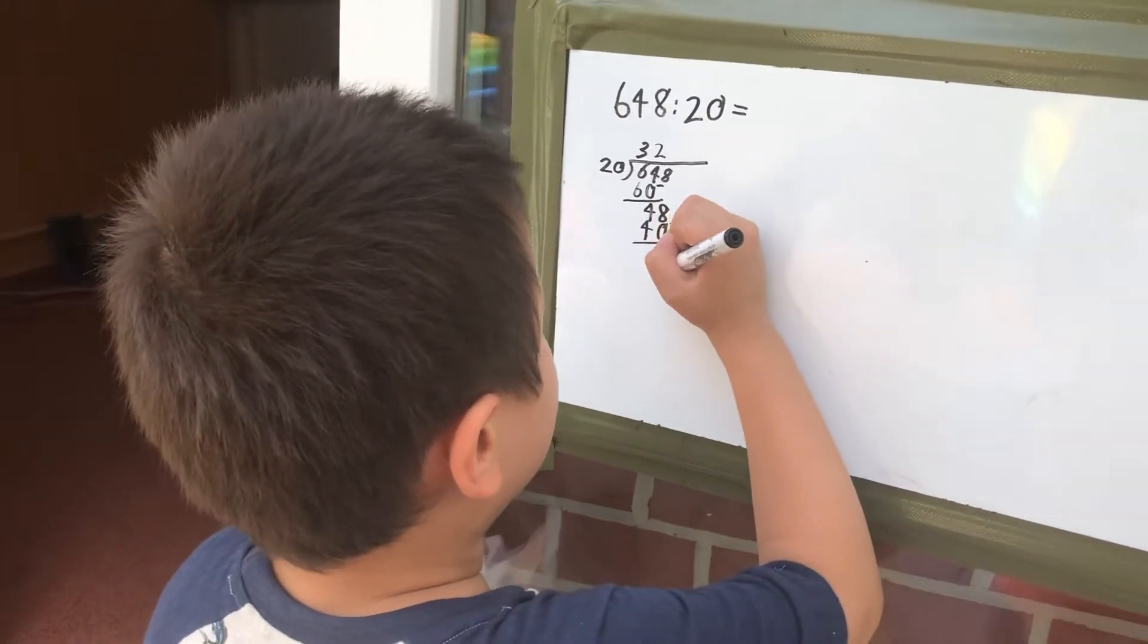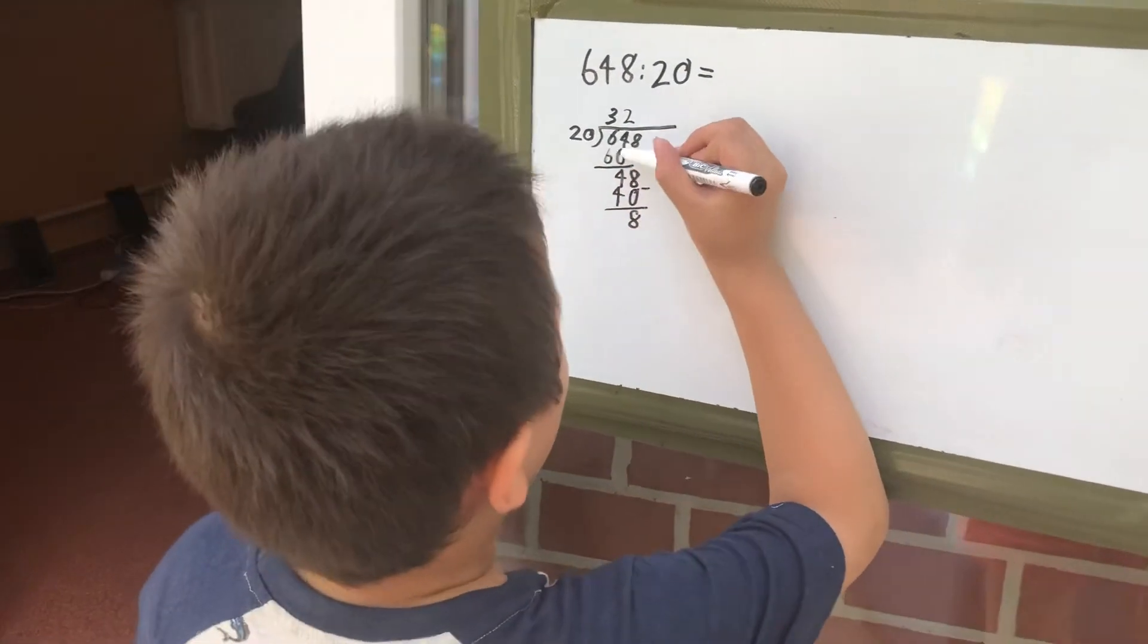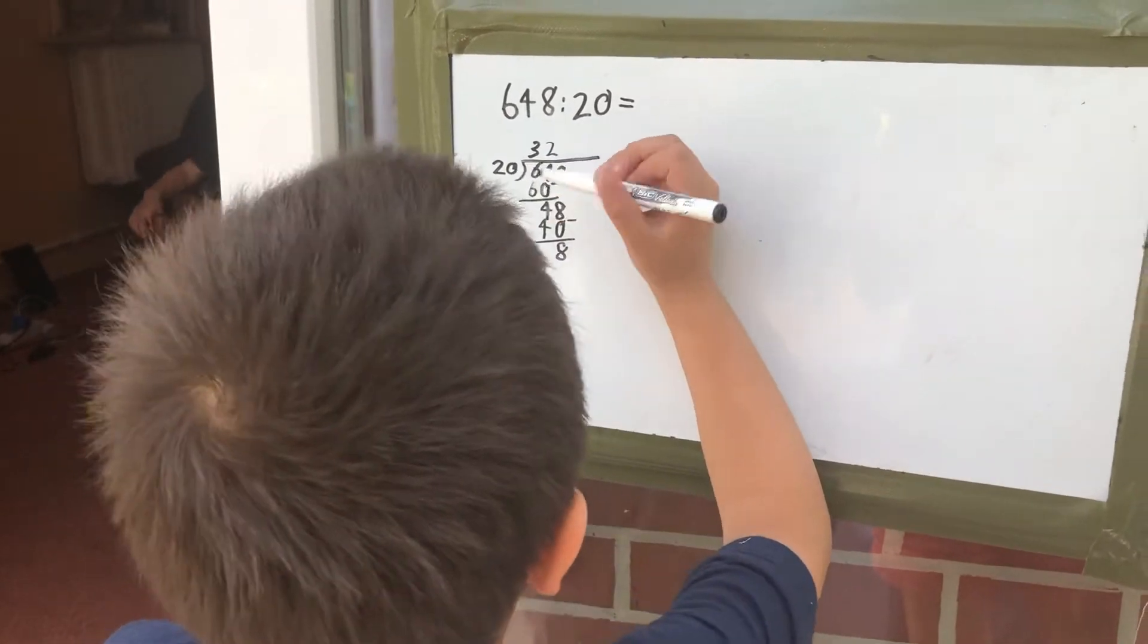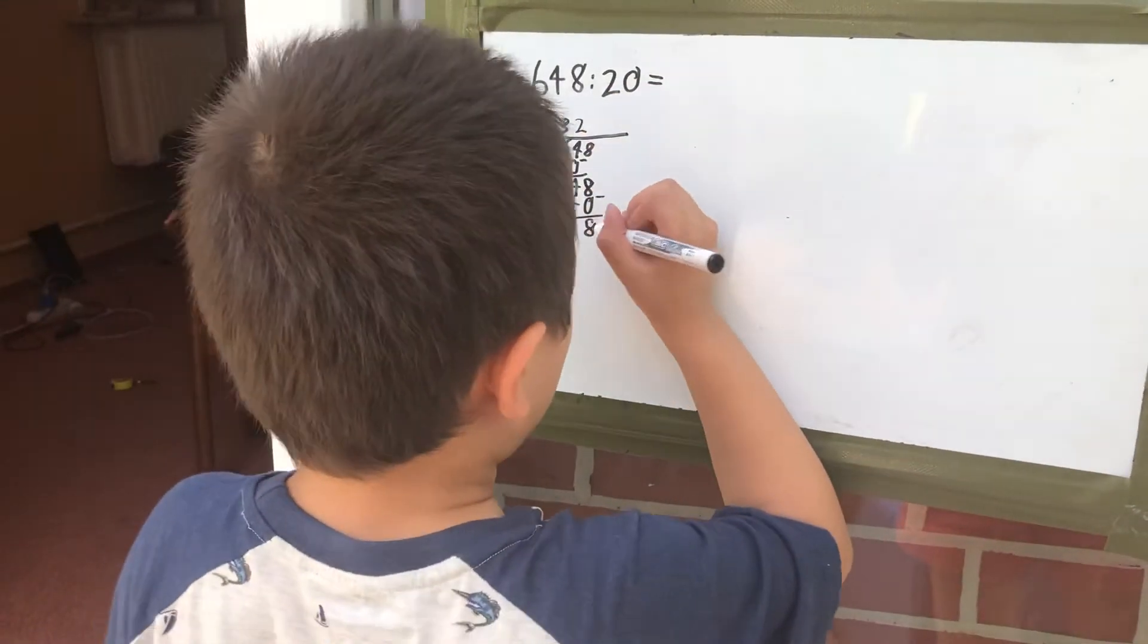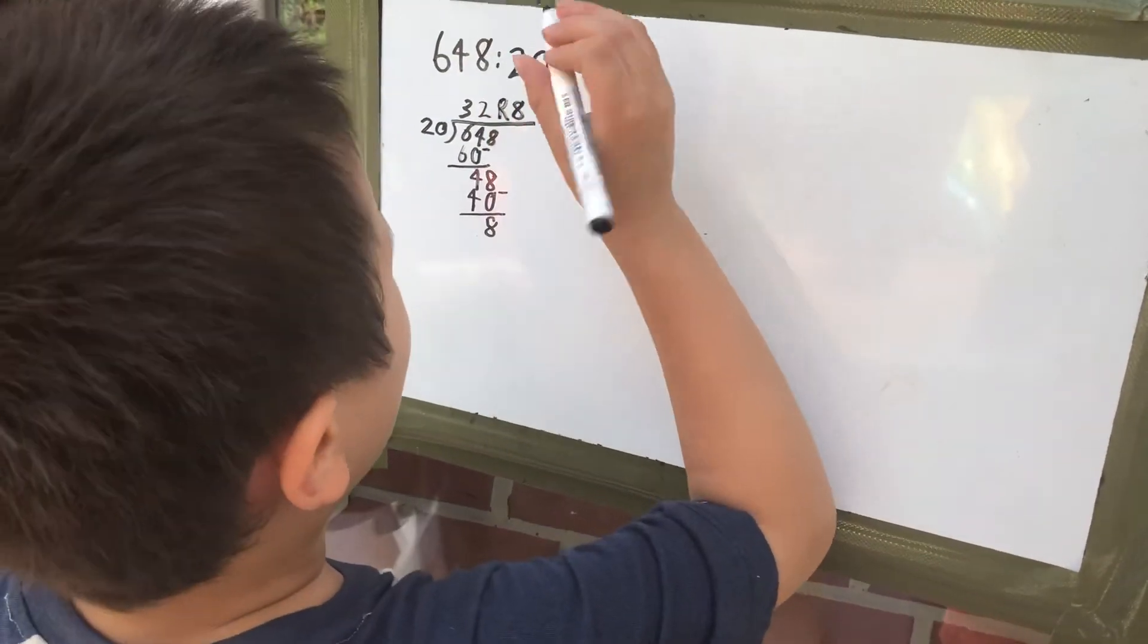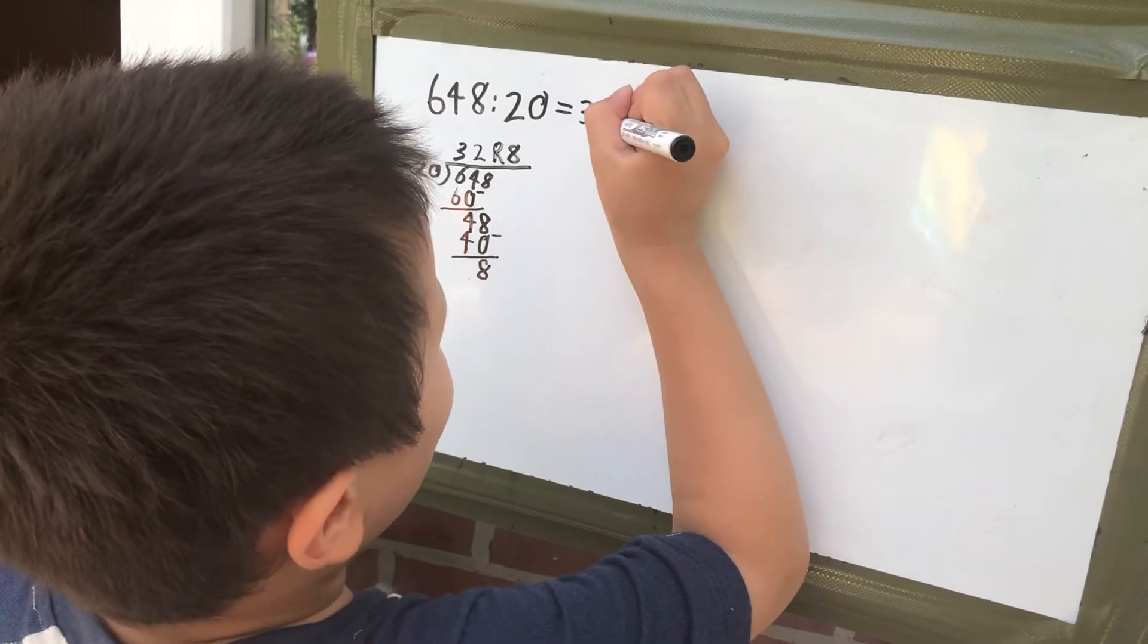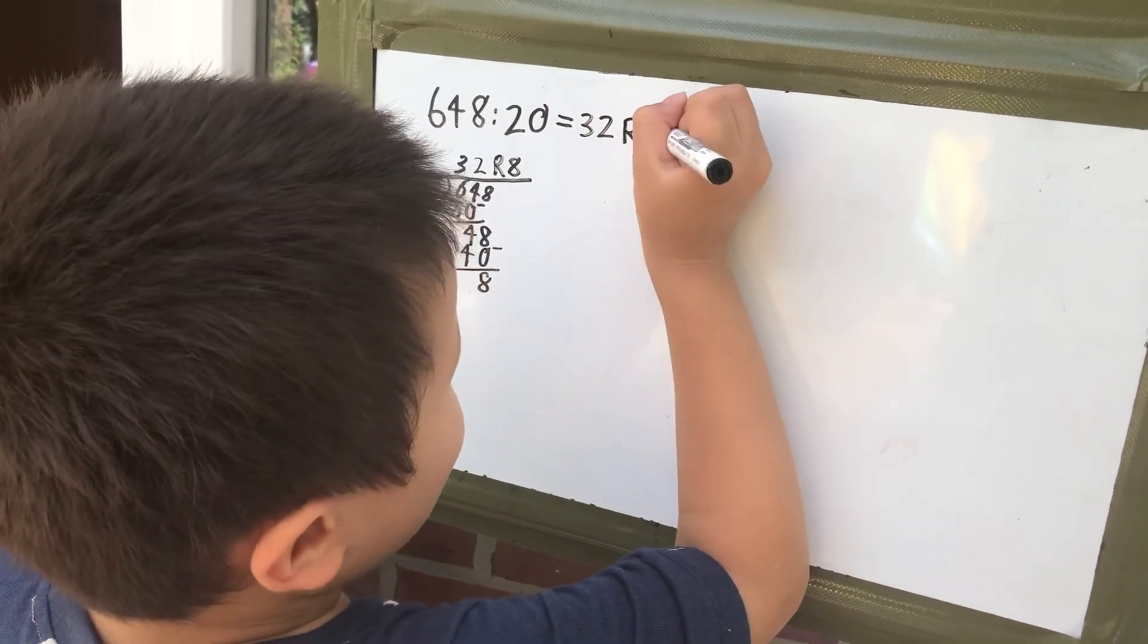We don't have to do this because it's 8. Anyway, we get off our problems. There's none left, but how about the 8? Well, we make that as a remainder. So, 648 divided by 20 equals 32, remainder 8.